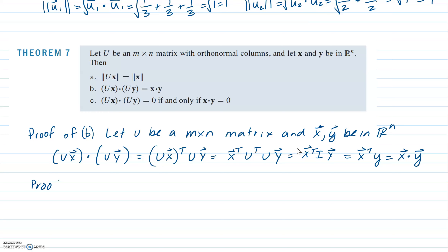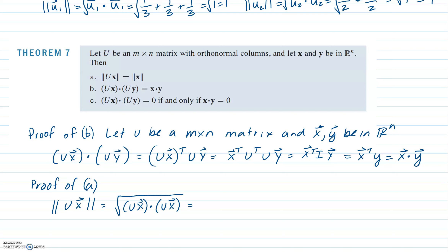The proof of part (a) follows the same approach, letting y = x: ||Ux||² = (Ux) · (Ux) = x · x from part (b), which by definition is ||x||². The proof of part (c) comes automatically from part (b) as well — since (Ux) · (Uy) = x · y, if one side equals 0, so does the other, and that's where the if-and-only-if comes from.